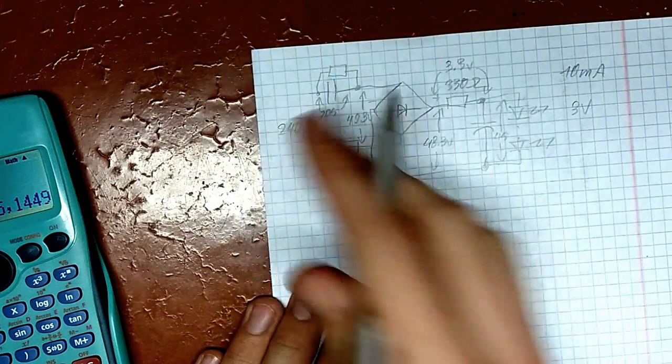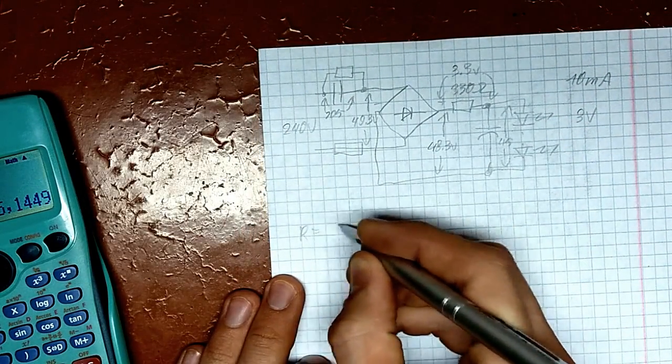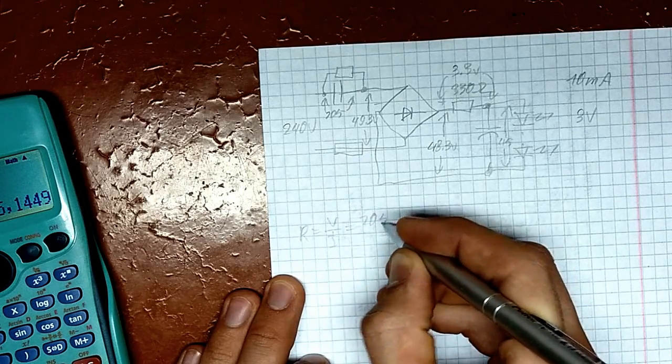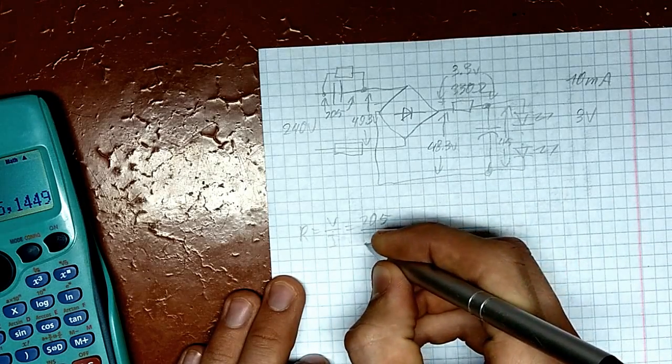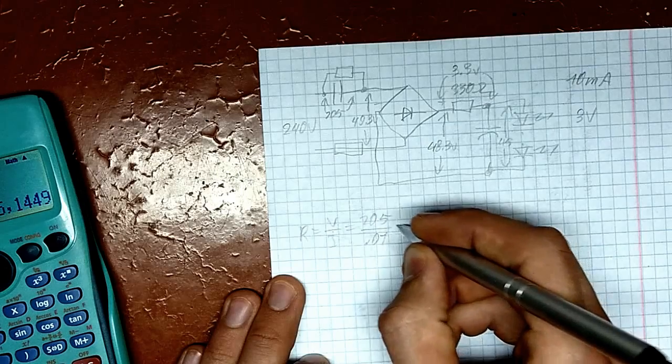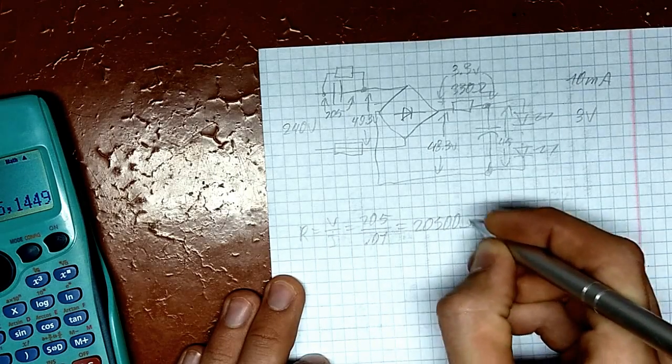Right now we're gonna imagine this capacitor as a resistor. And if it was a resistor, we will use Ohm's law, which will say that resistance equals voltage over current. So, voltage we need to drop, 205 volts. I hope you can see what I'm writing here. Over current, which is 0.01 amps. That is 20,500 Ohms we need.